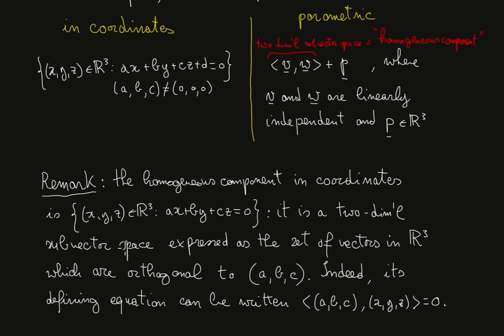And this subvector space, so all these vectors, are orthogonal to (a, b, c). Indeed, its defining equation can be written as the scalar product of the vectors (a, b, c) and (x, y, z) equals zero. So this expression here is the scalar product of the vectors (a, b, c) and (x, y, z).